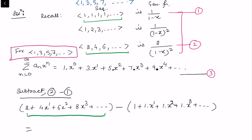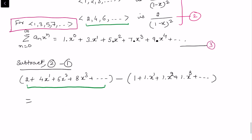The next term is 6 - 1 = 5 times x², then 7 times x³, then 9 times x⁴, and so on.